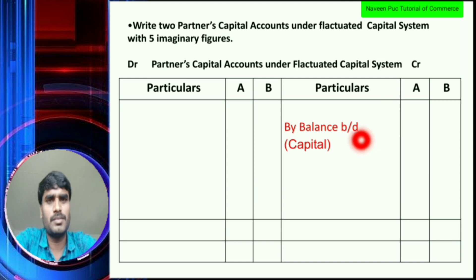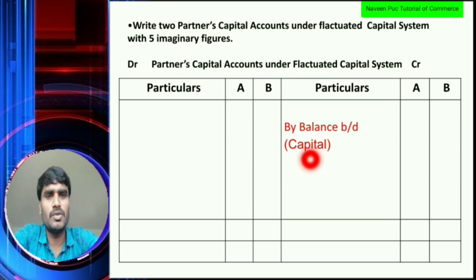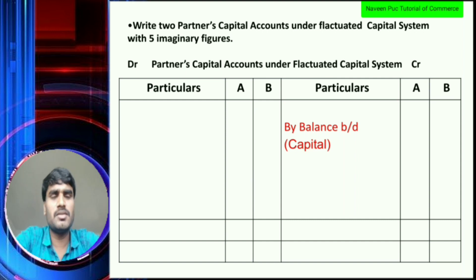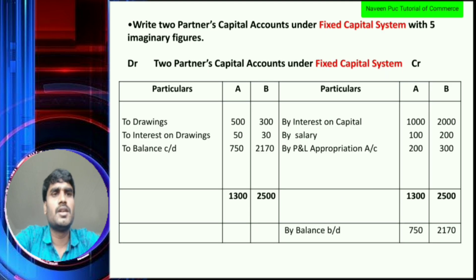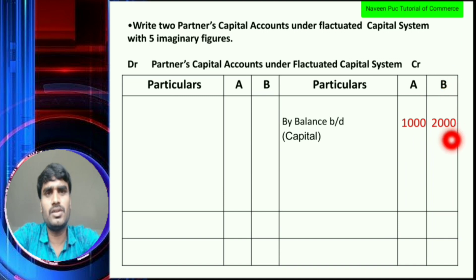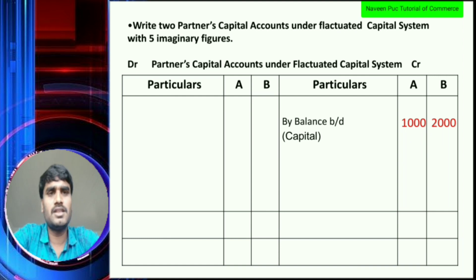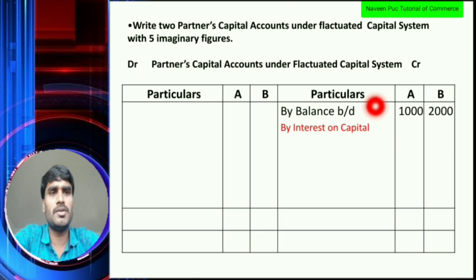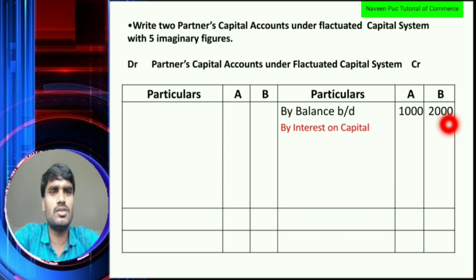By balance brought down — this is nothing but the capital amount. If we start to prepare capital: Partner A is Rs. 1,000 and Partner B is Rs. 2,000. So the first item is capital — by balance brought down.